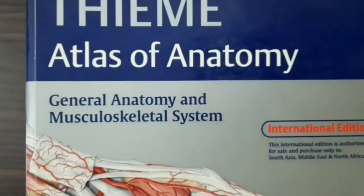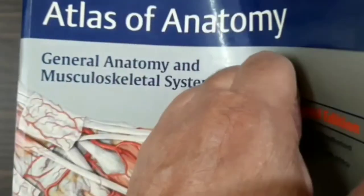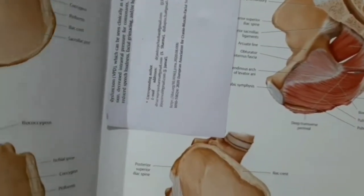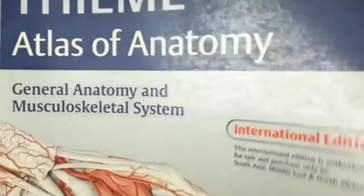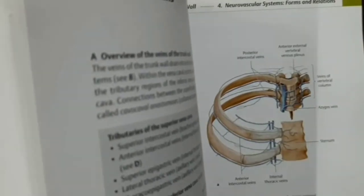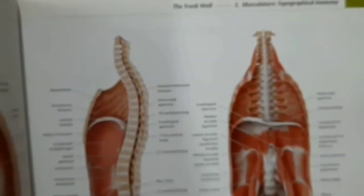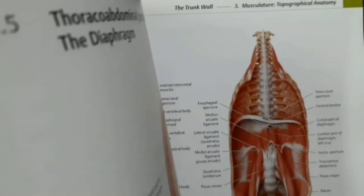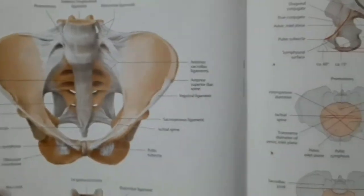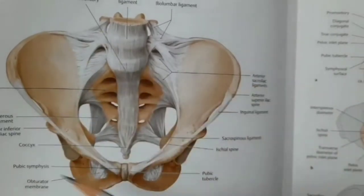This is the Thieme atlas of anatomy, which I will use to show you these structures. Let me find the pelvic cavity to show you first.